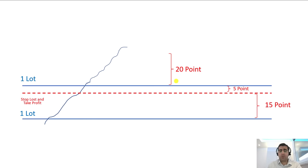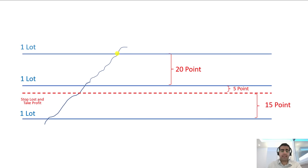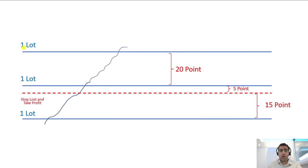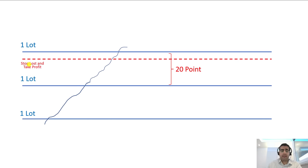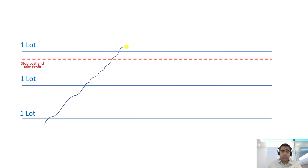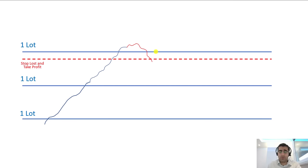Imagine that the price goes in our favor and increases by 20 points. In this case, again, instead of closing the order we open a new order with exactly the same lot size, and we transfer the stop loss to five points below the new order. This line would then be the take profit for the first and the second order, and the stop loss for the third one. We are hoping that the price goes even higher and we multiply our profit.